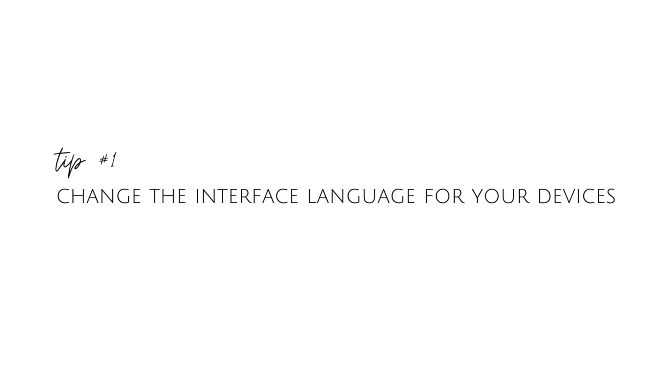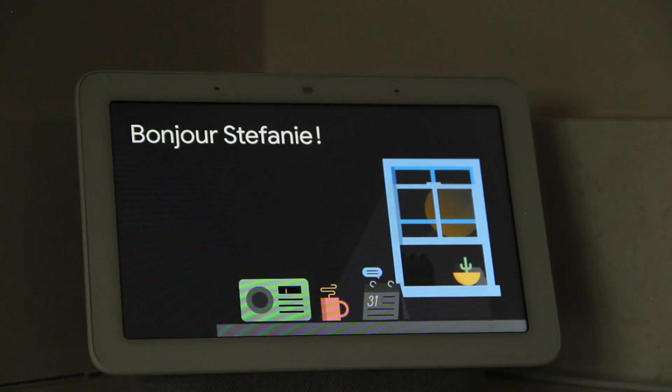If you're like me and you're raising your child in your non-native language, you know that half the battle for providing high-quality, high-quantity input for your child is making sure that you don't switch back into your native language. One thing I highly recommend: switch the interface language for your devices — your phone, computer, or smart devices — into the language you're trying to teach your child. That way your brain doesn't have to constantly switch between two languages, and when you look up a recipe or answer to a question, you'll find it in the target language.